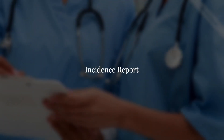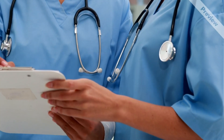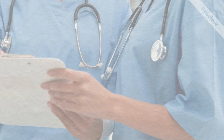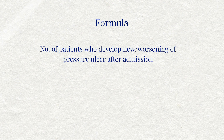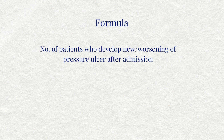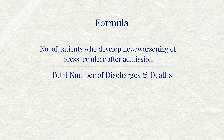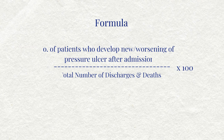Source of the data: Incidence Report. Indicator monitored by or responsible person: Nursing in charge. The formula is — Numerator: Number of patients who develop new or worsening pressure ulcer after admission. Denominator: Total number of discharges and deaths, multiplied by 100. Sample size: Not applicable.